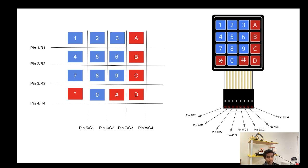Pin number 8 initializes the final column, which includes A, B, C, and D. To access these values, it's similar to longitude and latitude — we just need the coordinates to get a specific value. For example, if you want to figure out if the user clicked number 1, then we need to call pin number 1 (row number 1) and pin number 5 (column number 1) to pinpoint the exact value.